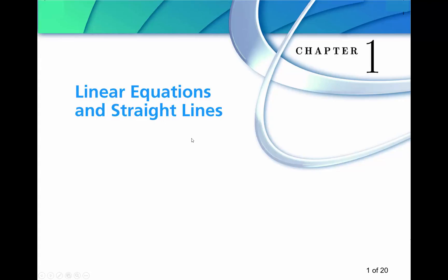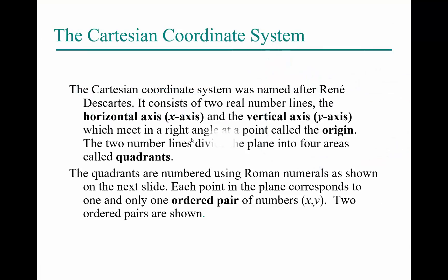To be able to graph linear equations, which are straight lines, remember the Cartesian coordinate system was named after René Descartes. He used two real number lines: the horizontal axis is the x-axis and the vertical axis is the y-axis. They meet at a right angle at a point called the origin, where both x and y equal zero.